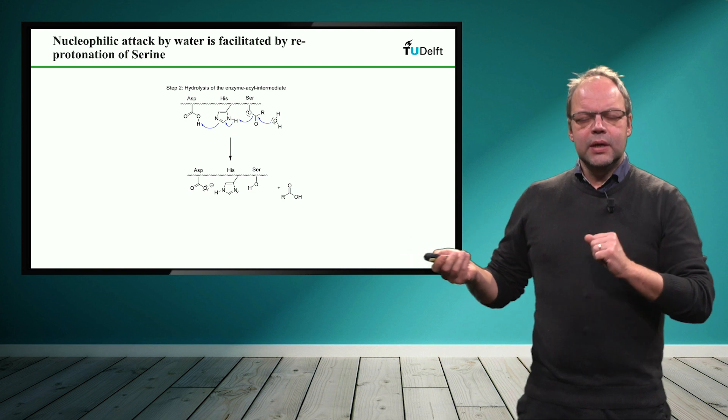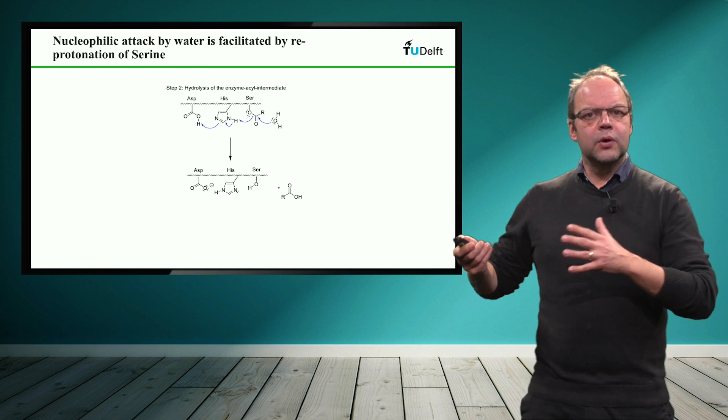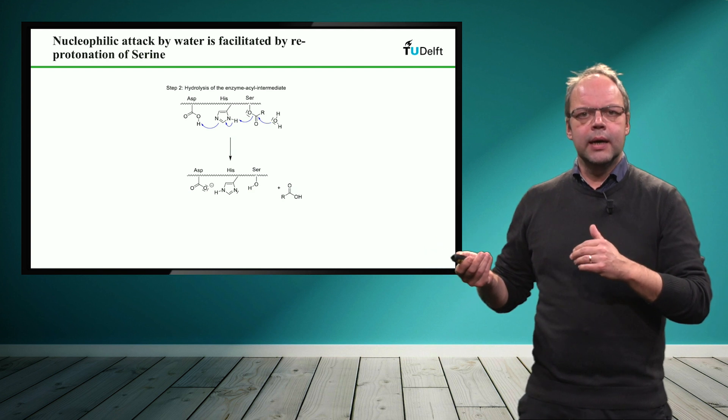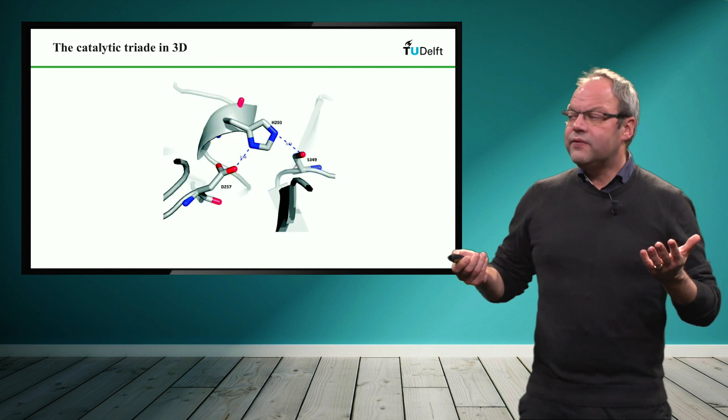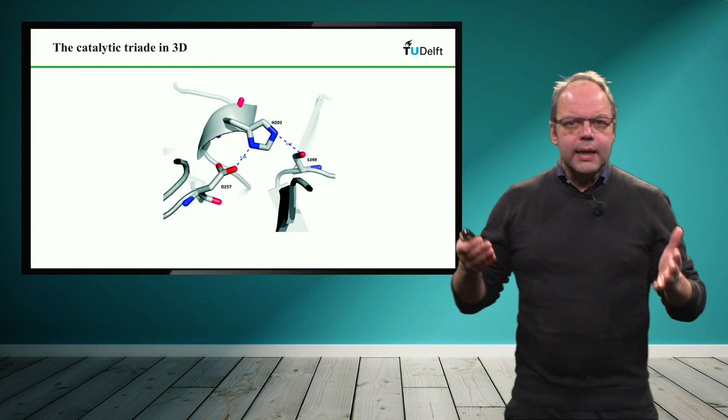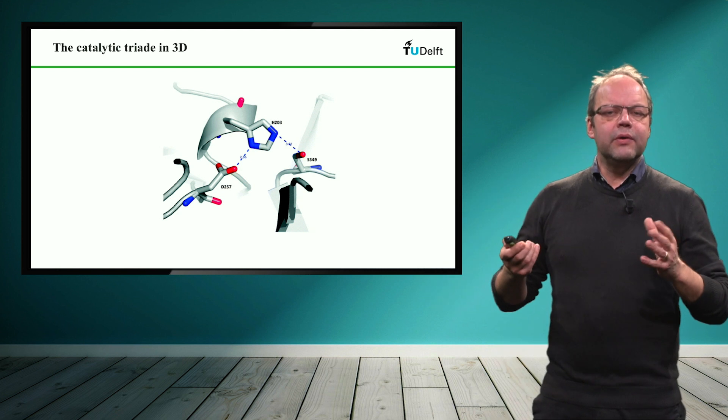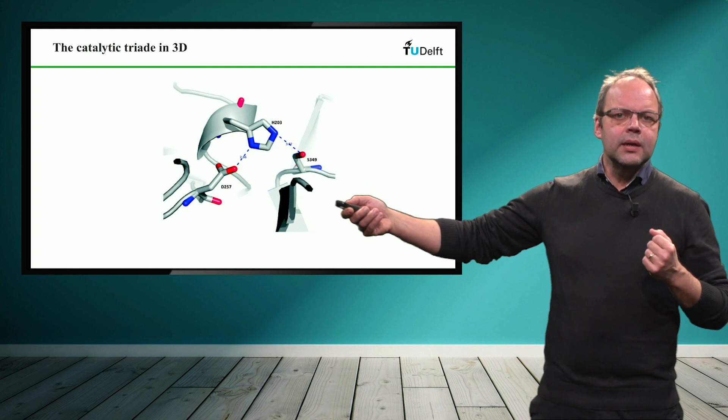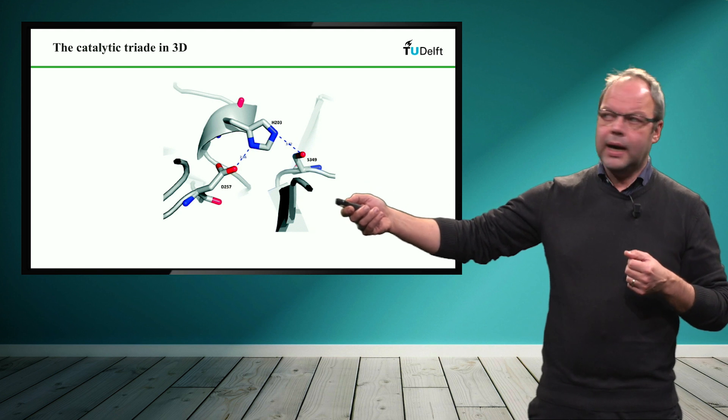So all these three amino acids are important for the catalytic reaction to cleave the ester into an acid and an alcohol. And it's also very important that these three amino acids, the serine, the histidine and the aspartate are very close to each other. And this is what you see here in a three dimensional structure of one of these serine hydrolases.